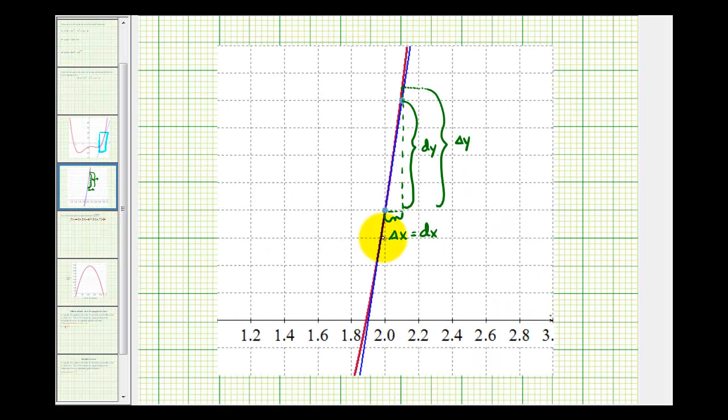We're starting at an x value of two and we're told that differential x, which is the same as delta x, is equal to zero point one, which means x is changing from two to two point one. With this change we want to use differential y to approximate the change in y of the function.